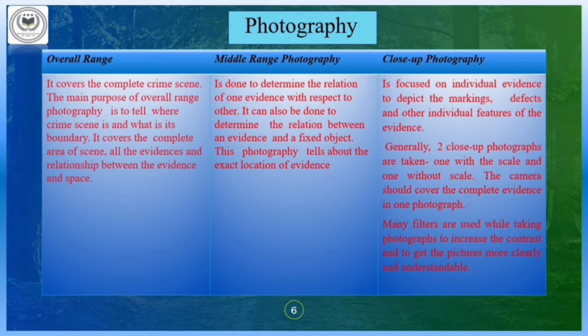Next is middle range photography, used to determine the relationship between one evidence with respect to another, and also to determine the relationship between a fixed object and the evidence. A fixed object can be a chair or anything surrounding where the object is placed. Then close-up photography is used for evidence photography — it focuses on individual evidence and depicts the markings in detail. In the middle range photography we determine the location of each evidence with respect to the other, while close-up photography aims to detect the individual features or defects present on the evidence. Generally, two close-up photographs are taken: one with scale and one without scale.